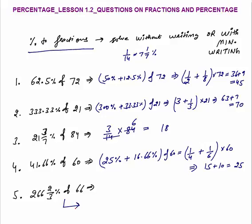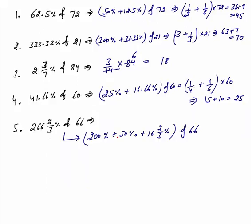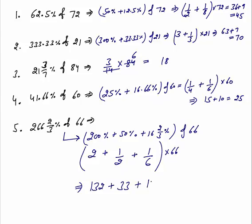The last in this set is 266 2/3% of 66. You can break this as 200% plus 50% plus 16 2/3% of 66. Now you can do this verbally — I'm just writing to explain. 200% means twice, 50% means half, and 16 2/3% is 1/6 of 66. 2 of 66 is 132; 1/2 of 66 is 33; plus 1/6 is 11. Now 132 plus 33 equals 165, plus 11 gives 176 as your final answer. You must be able to add this verbally.